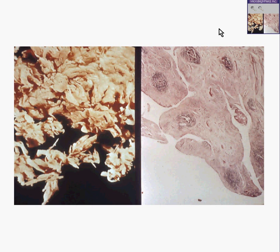In rheumatoid arthritis, which is an autoimmune disease in which the body attacks its own synovium, the primary portion of the joint involved with the disease process is the synovium. As you know, synovial joints have bone involved in them, articular cartilage, underlying bone, joint spaces, perhaps tendons, and synovium. And in rheumatoid arthritis, synovitis is the primary pathologic process.